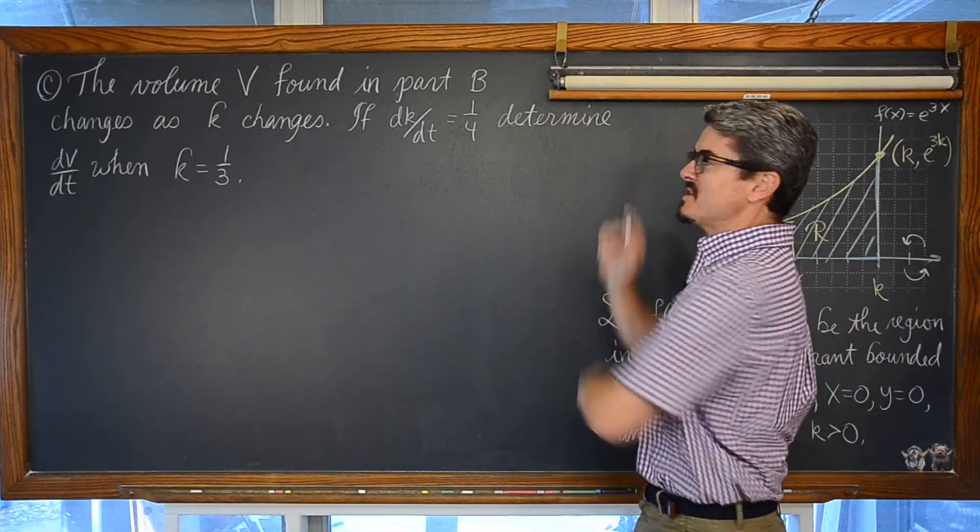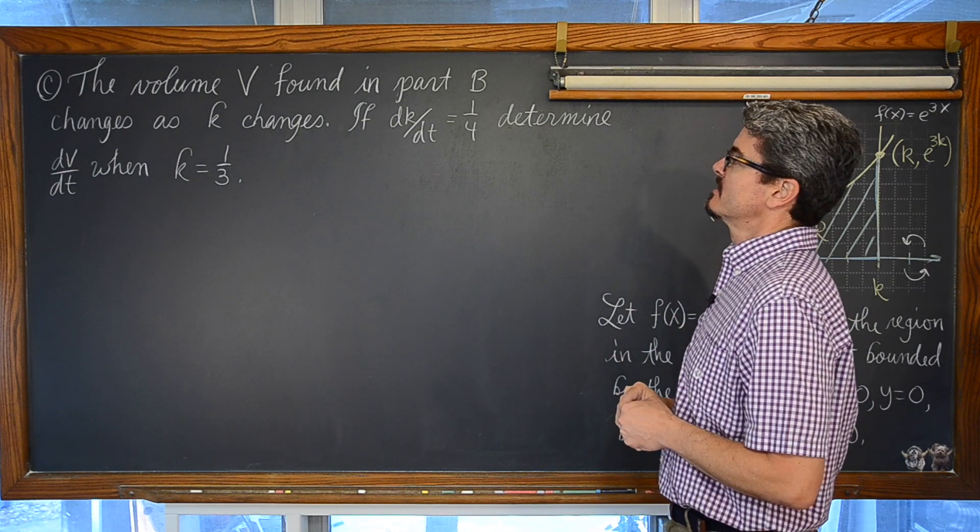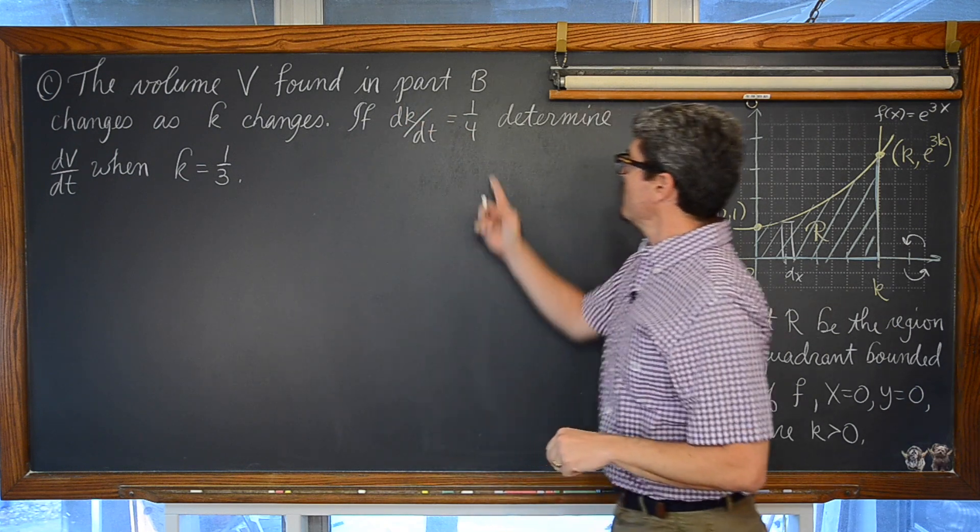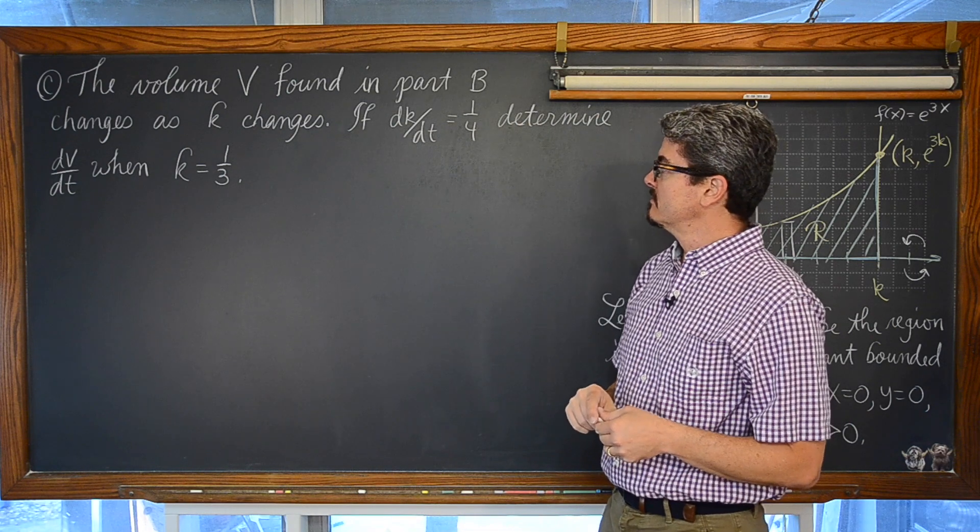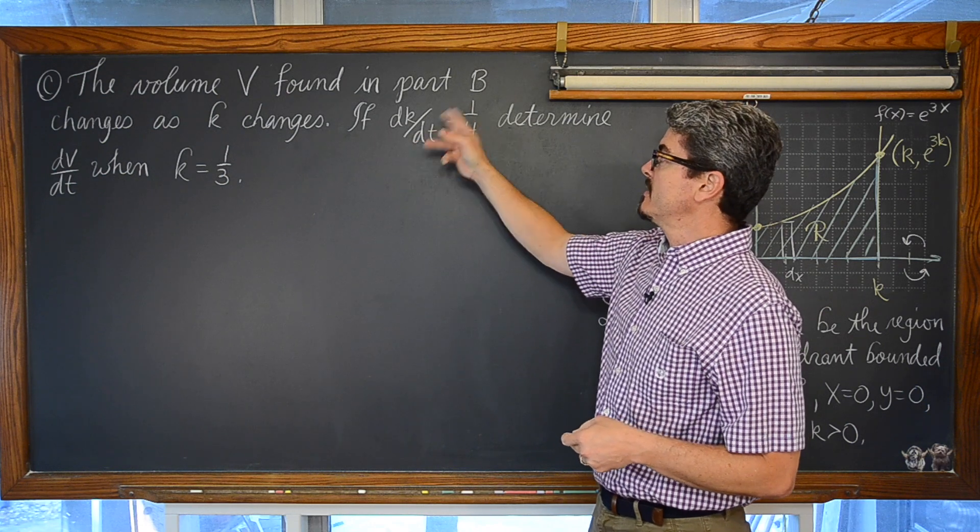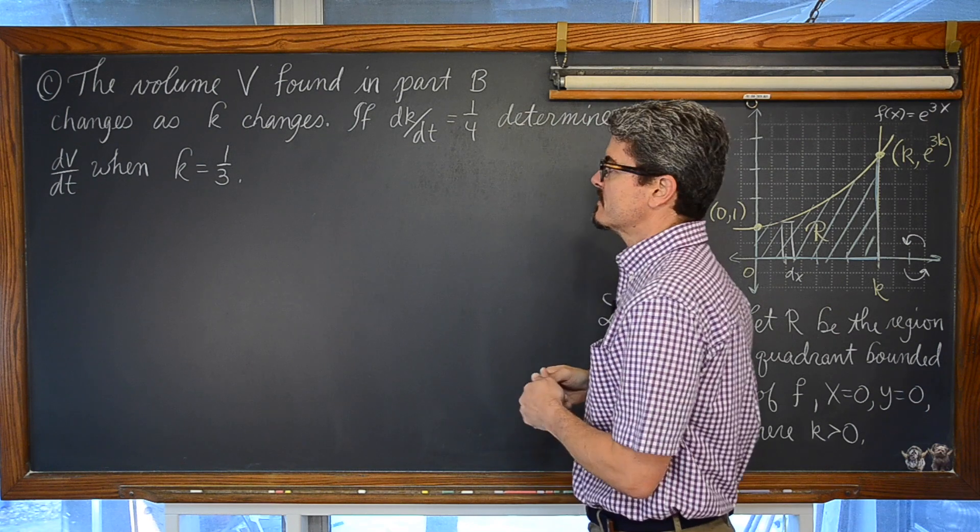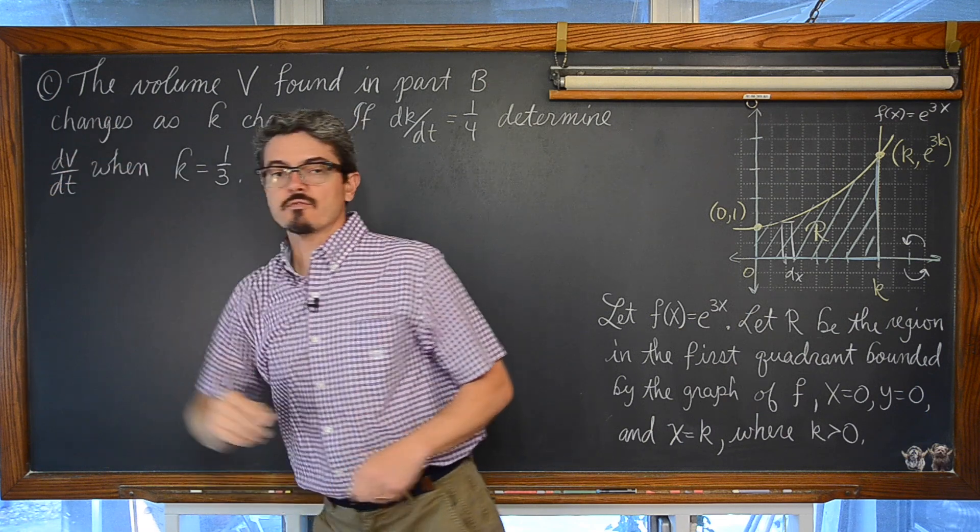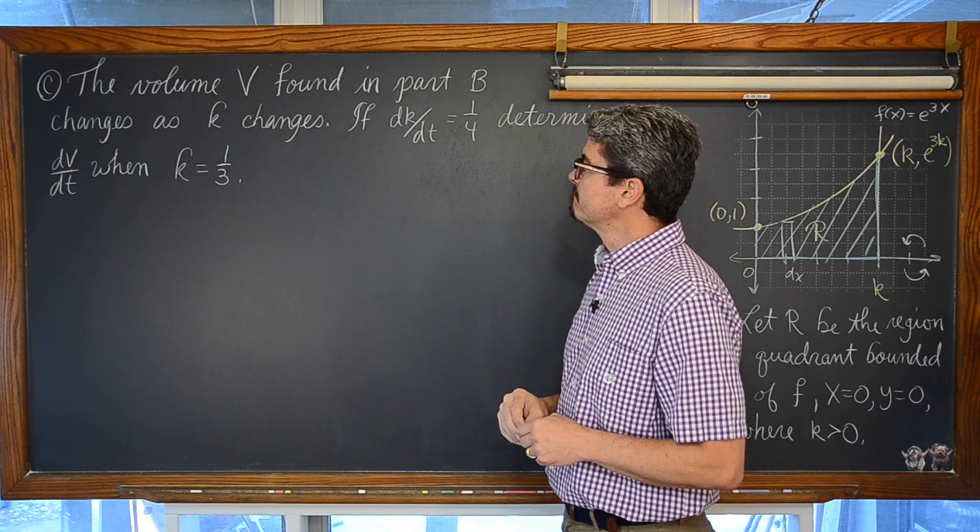Part C, the last part. The volume V found in Part B changes as k changes. If dk dt is equal to 1 fourth, determine dV dt when k is equal to 1 third. So if the rate of change of k with respect to time is 1 fourth units per some measure of time, determine what the rate of change is for the volume with respect to time when k is equal to 1 third specifically.